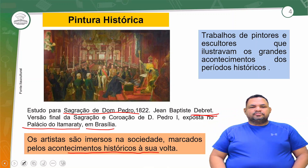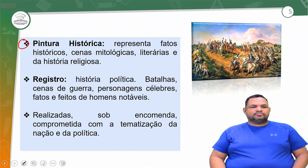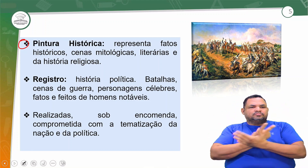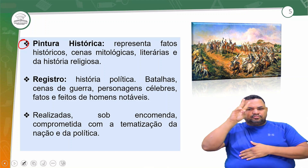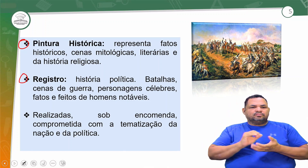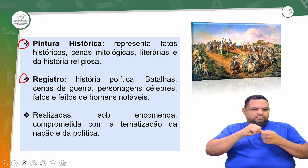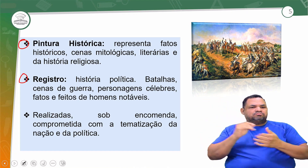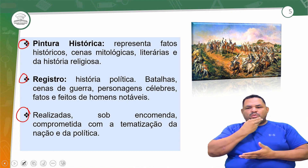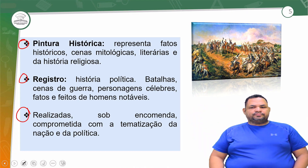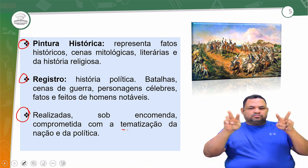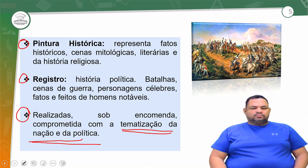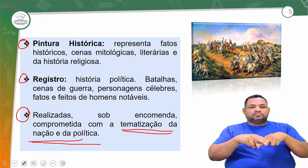Você tem o estudo para a sagração de Dom Pedro em 1822 pelo Debret, que veio naquela comissão, naquela caravana. A versão final da sagração e coroação de Dom Pedro I está exposta no Palácio Itamaraty, em Brasília. Os artistas são imersos na sociedade, marcados pelos acontecimentos históricos à sua volta — tudo encomendado. Pintura histórica representa fatos históricos, cenas mitológicas, literárias e de história religiosa, história política, batalhas, cenas de guerra, personagens célebres e feitos dos homens notáveis. Era realizada sob encomenda, comprometida com a tematização da nação e da política. É assim que nasce a história da pintura no Brasil.